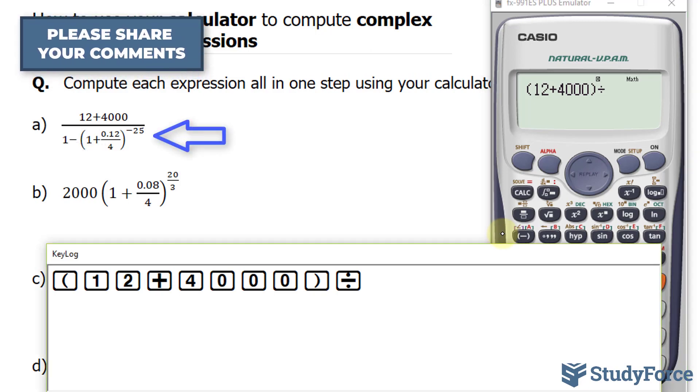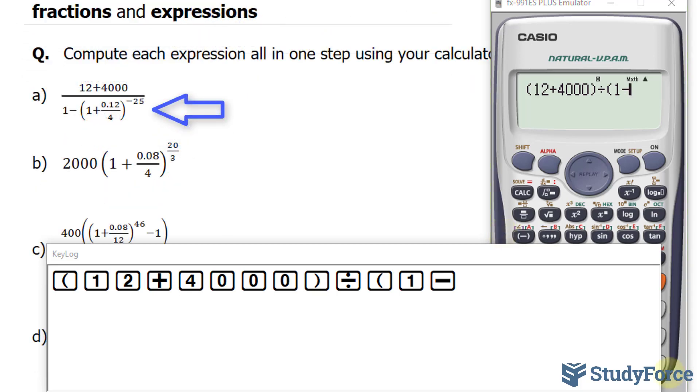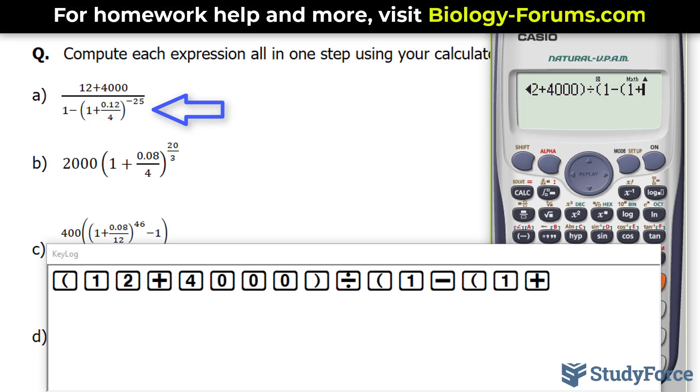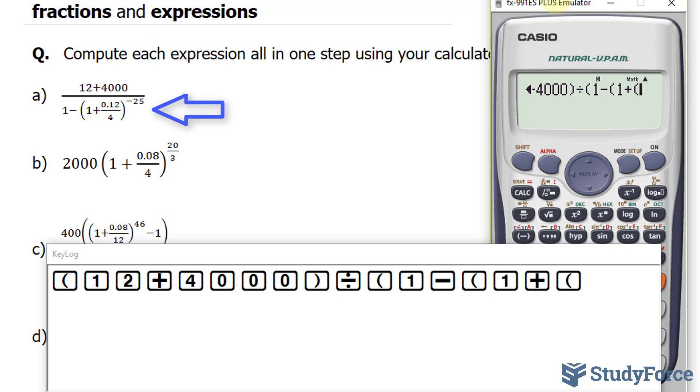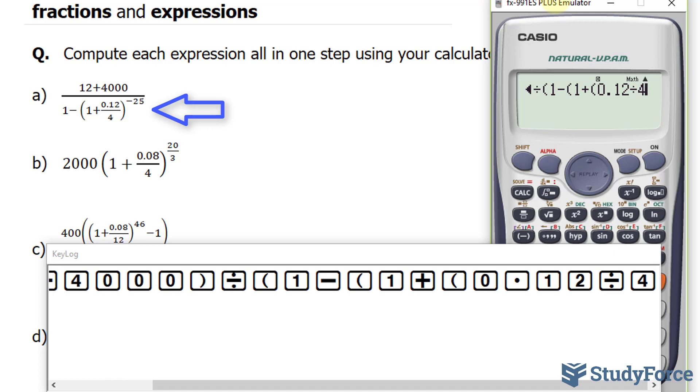Now the denominator is bracket 1 minus. And then we'll open up a set of parentheses here. So I'll insert brackets: 1 plus. And notice that we have a fraction within a fraction. This is why it's called a complex fraction. One suggestion for you is that if you ever see a fraction within a fraction, put the smaller fraction in parentheses as well. So I'll open up parentheses: 0 decimal 12 divided by 4. Close, and then close this bracket.